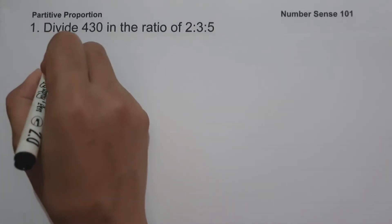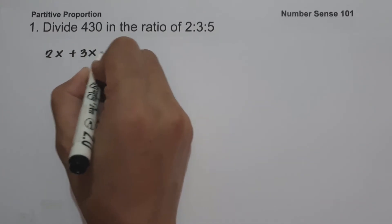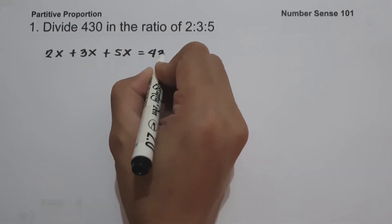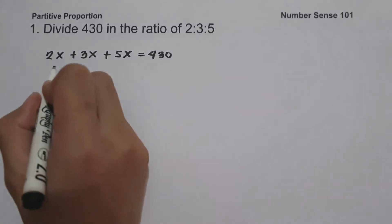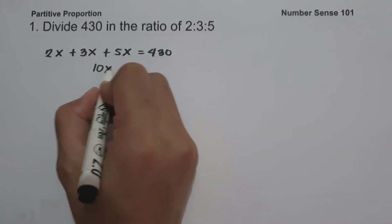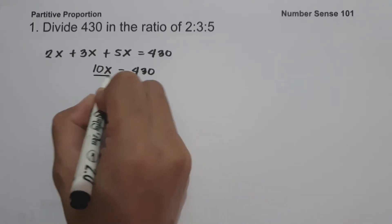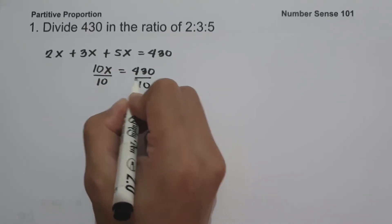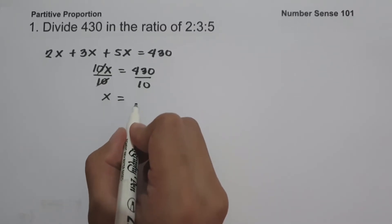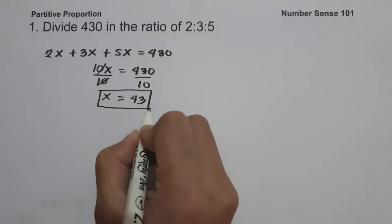we are going to have 2x plus 3x plus 5x equals 430. So 2x plus 3x plus 5x is 10x, which equals 430. Let us divide both sides by 10, so x equals 430 divided by 10, which is 43. This will be the value of x.